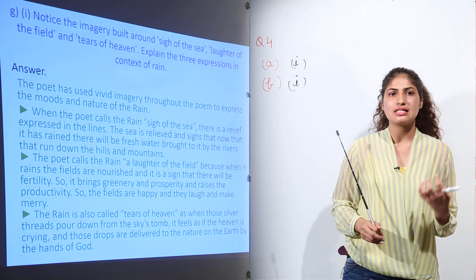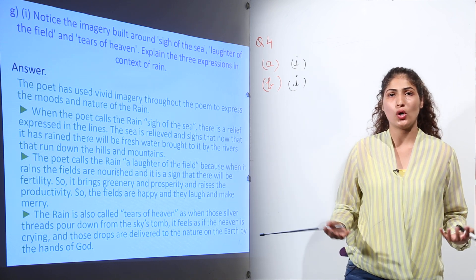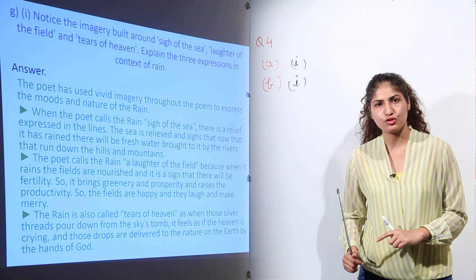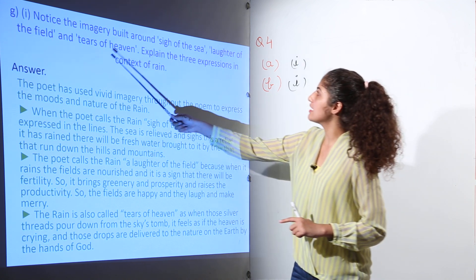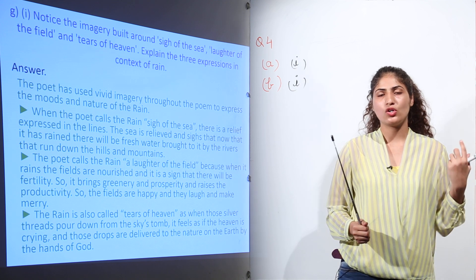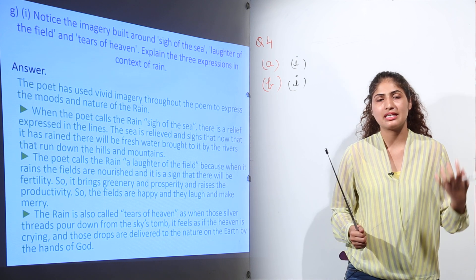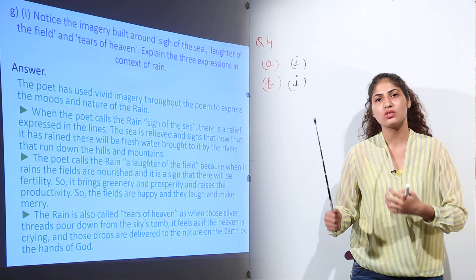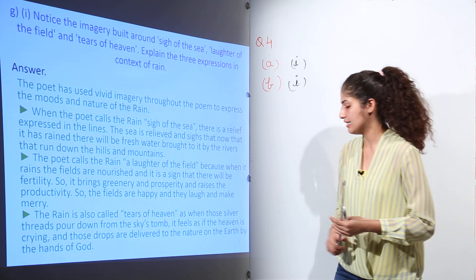because it is providing the nourishment to the fields only. Tears of the heaven, now it refers to the gods. It means that when rain is falling, they are not only the tears, but they represent the sadness of the gods which are there in the sky, in the heaven.